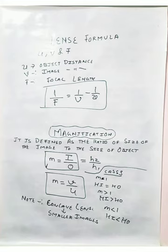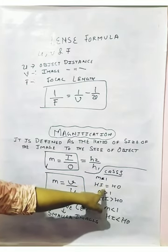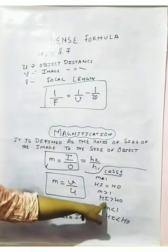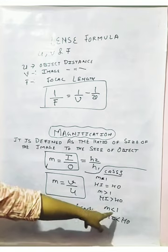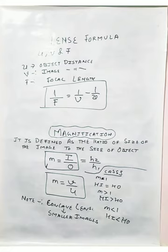So basically magnification gives you the idea of how much the image is magnified or reduced — whether it is enlarged or small. If it is equal to 1, the image is the same size. When greater than 1, the height of the image is greater. When less than 1, the height of the object is greater. This is about lens formula and magnification.